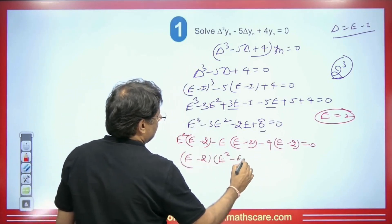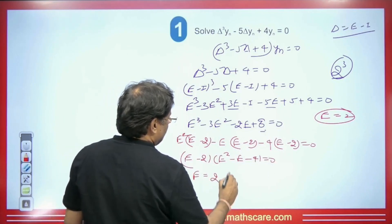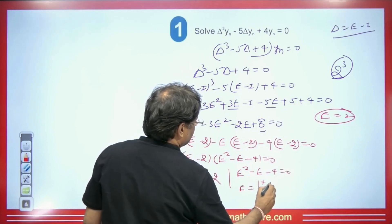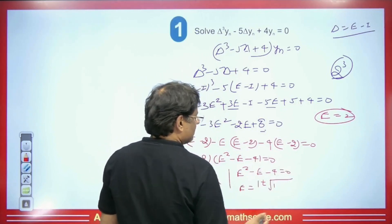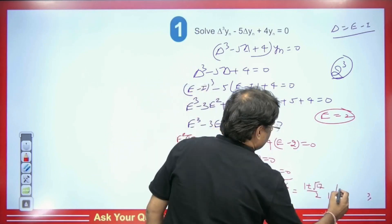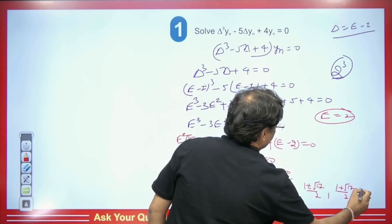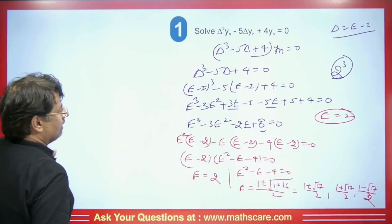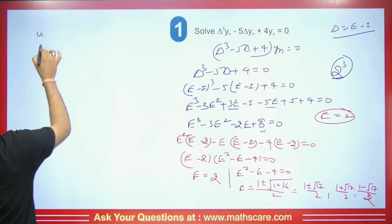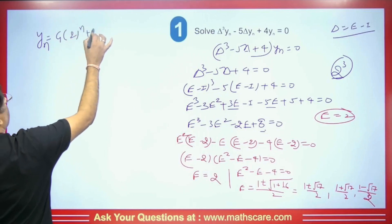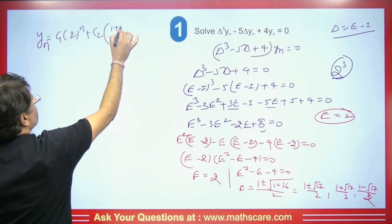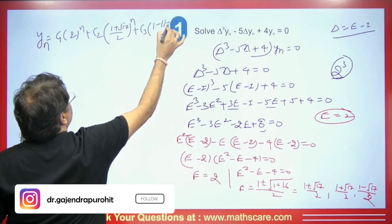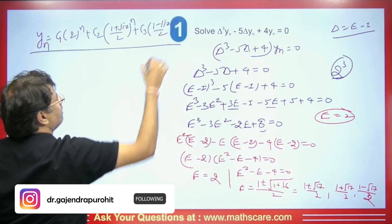From E² - E - 4 = 0, the two roots are (1 + sqrt(17)) / 2 and (1 - sqrt(17)) / 2. These are real roots, not imaginary. So the CF will be yn = C1·(2)^n + C2·[(1 + sqrt(17))/2]^n + C3·[(1 - sqrt(17))/2]^n. This is the CF, and we can easily solve it here.